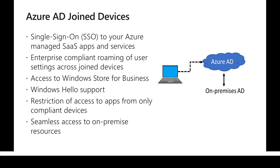There are additional capabilities like access to Windows Store for Business, Windows Hello support as an authentication mechanism, and more. From a security perspective, the organization has already pushed policies onto the device, so they allow application access from secure or compliant devices only. This also helps with data protection — in case the device is lost, the organization can use capabilities like remote wiping.